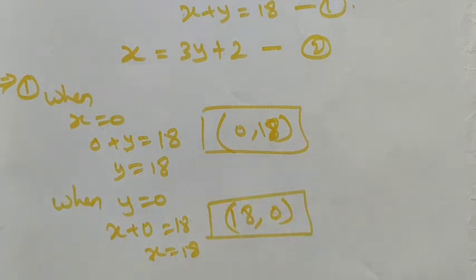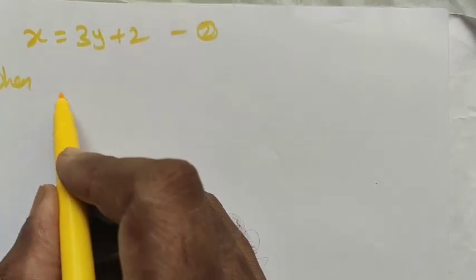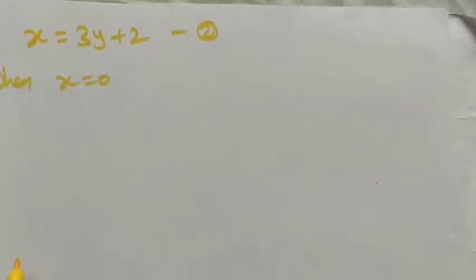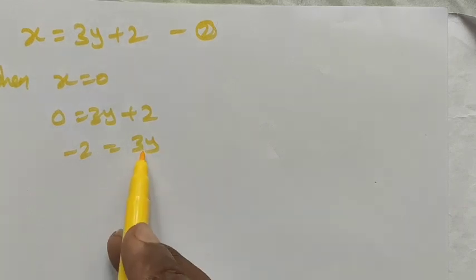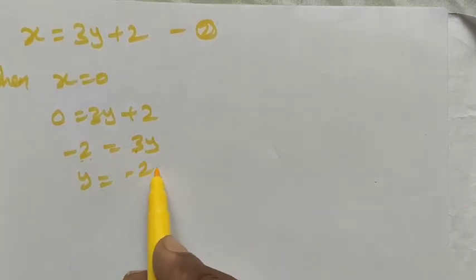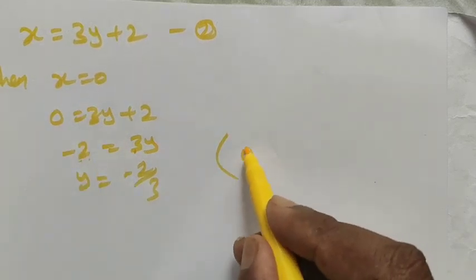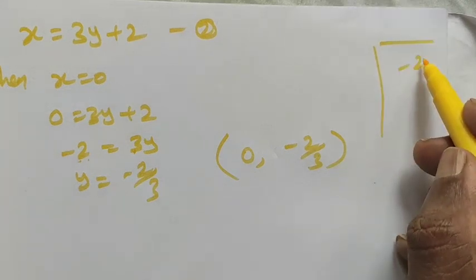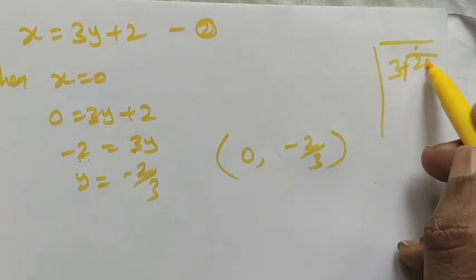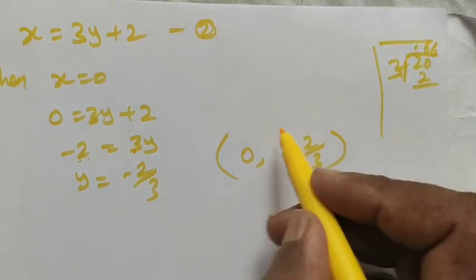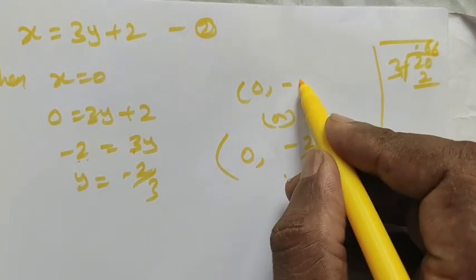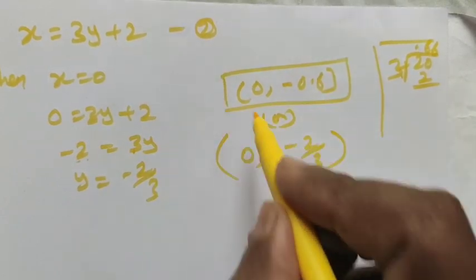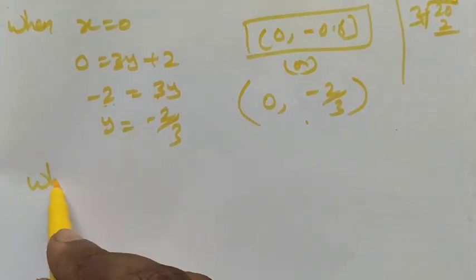Now for the second equation, x = 3y + 2. When x = 0: 0 = 3y + 2, so −2 = 3y, giving y = −2/3, which is approximately −0.6. The ordered pair is (0, −0.6).